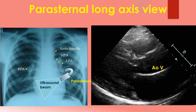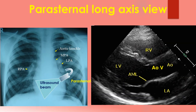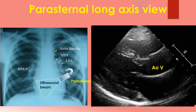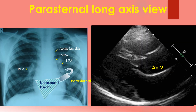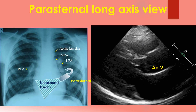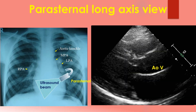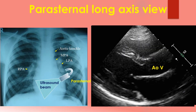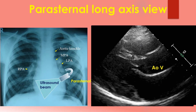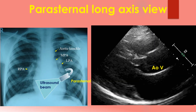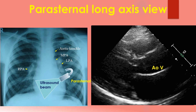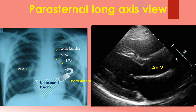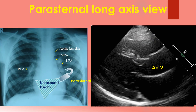Here is an animated view from the parasternal long axis. Opening and closing movements of the aortic and mitral valves are visible. Contraction of each region of the left ventricle is also inspected closely for any abnormalities of regional wall motion.